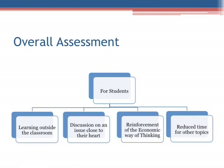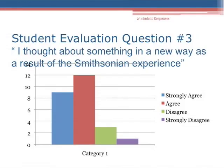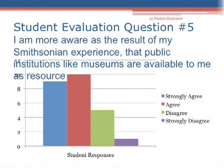For the student evaluation, I picked two questions. The first: 'I thought about something in a new way as a result of the Smithsonian experience.' Of 25 students who responded, most either strongly agreed or agreed. The second question: 'I am more aware that public institutions like museums are available to me as a resource.' Again, the student response from the 25 students was very strong. I thought that was very nice.